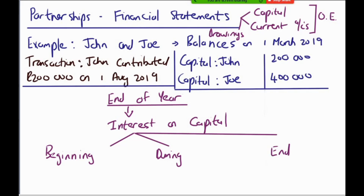In terms of the transaction, it says that John contributed 200,000 on the 1st of August 2019. There are three ways in which interest on capital can be calculated. Your first step would be to calculate the interest on capital, and a good tool to help you is your timeline. At the beginning of the financial year, the balance is given to us - John has 200,000.